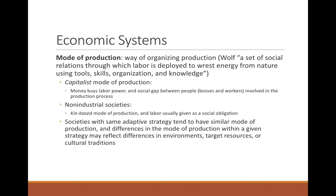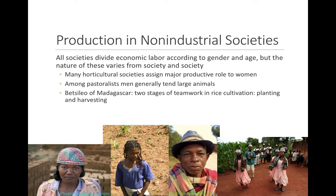Some ways that labor is divided across populations are consistent — economic labor is divided according to gender and age, but the way it's divided varies based on adaptive strategies and cultural specifics. Among hunter-gatherers, there's a sex-based division of labor: men hunt, women gather carbohydrate resources and care for children. This is generally because hunting isn't conducive to childcare — you can't interrupt a hunt for a dependent offspring without losing your prey.